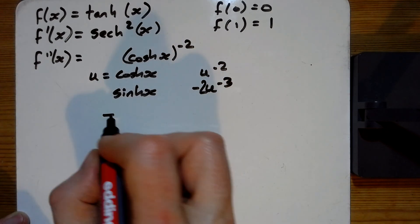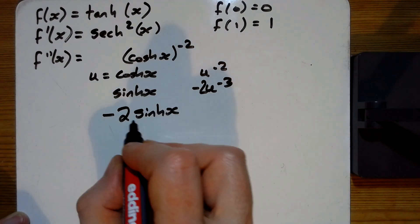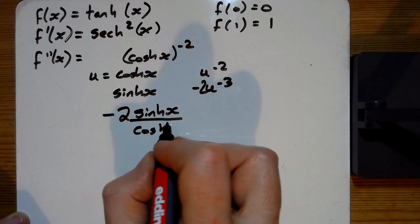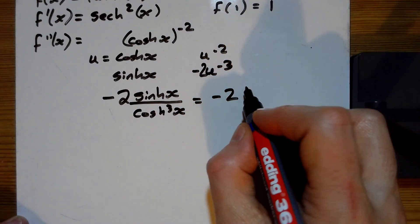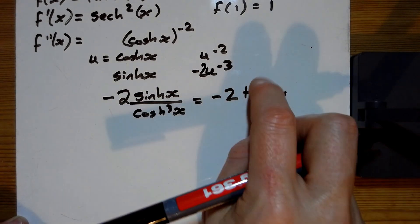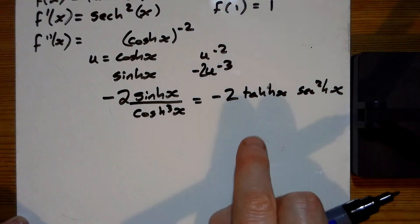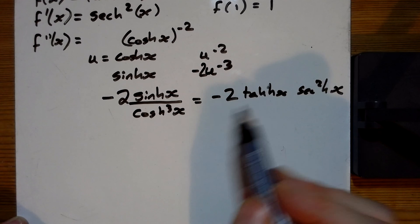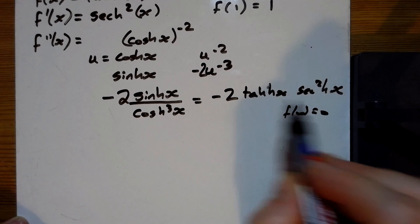So the differentiating goes to minus 2 sinh x over cosh cubed x. So that's the same as minus tanh x for one of them, and then another sech squared. Okay, you like that? I think that's right. So I've got a sinh of a cosh there to get tanh and the rest of it there. Of course, that's going to be 0 again, because that bit there is 0.